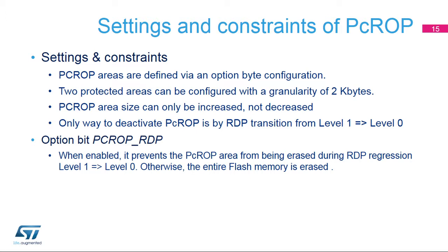STM32L4 microcontrollers have a new feature that prevents the code in the PC-ROP areas from being erased during the regression operation. By setting the PC-ROP RDP bit in the option bytes, the code in the PC-ROP areas will not be lost. To further explain the execute-only meaning of PC-ROP: PC-ROP is a substate of the RDP, designed to prohibit other code executing on the STM32 from reading the flash memory. When PC-ROP is enabled, the AHB only allows the instruction bus to work, so code can only be executed.